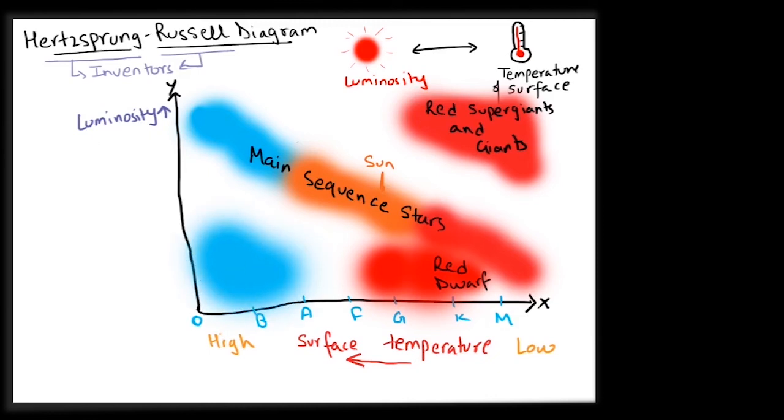Stars like white dwarfs and neutron stars which are very dim due to their compact size, but have surface temperatures very high, occupy the bottom left corner of the HR diagram.